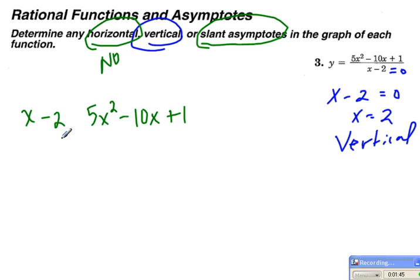So I'm going to set up my long division, and then I'll ask myself, what can I multiply times x in order to get a positive 5x squared? And that would be 5x. So 5x times x gives me the 5x squared. Then 5x times a negative 2 gives me a negative 10x.